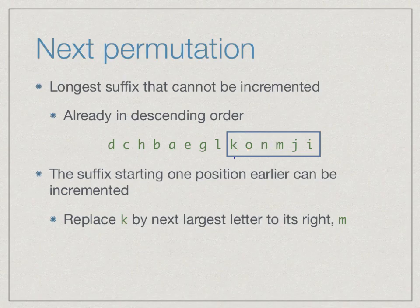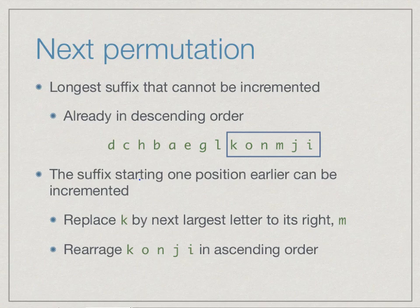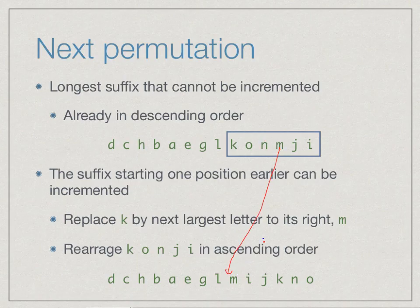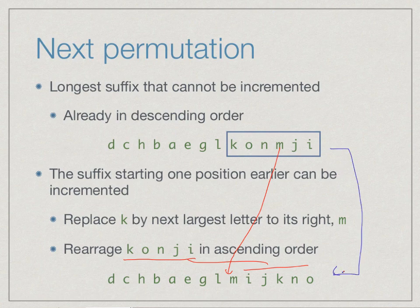Among suffixes that begin with the letter m, I need the smallest one. That means I may rearrange the remaining letters k o n j i in ascending order to give me the smallest permutation which begins with m. So I have now moved this m here, and I have taken these letters and rearranged them in ascending order to get i j k n o. Therefore, for this permutation, the next permutation is this one.